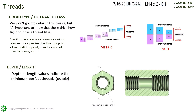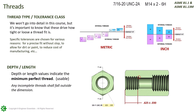Depth and length values on a thread indicate the minimum perfect thread, which translates to the usable thread. The measurement is taken from the outside surface to the last full thread. Notice the small piece of incomplete thread is not included — any incomplete threads shall fall outside of this dimension.